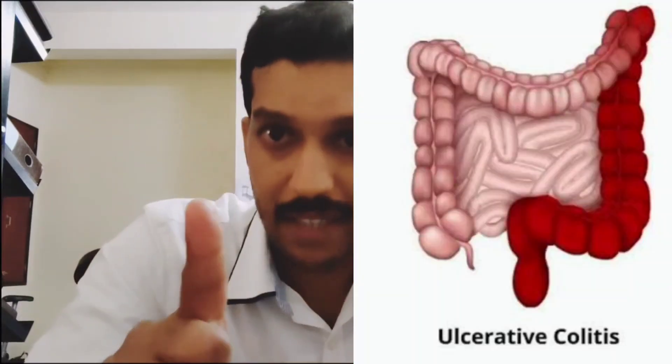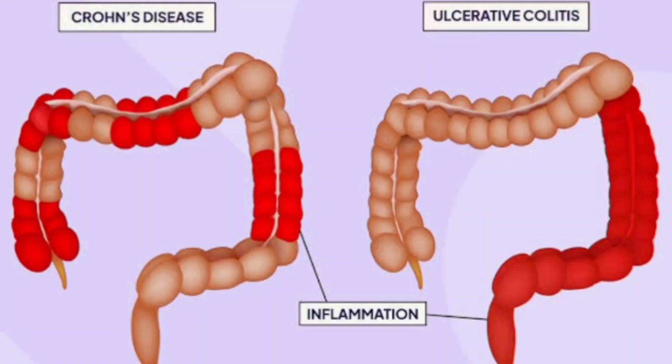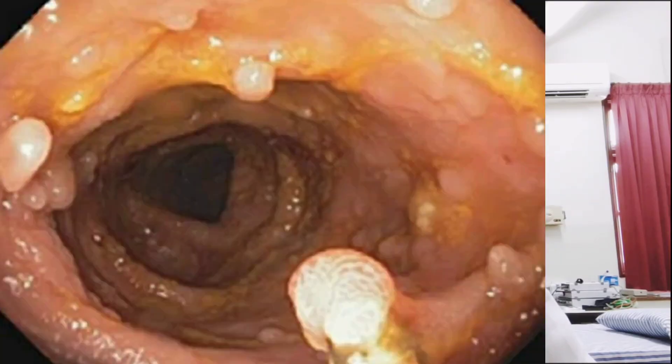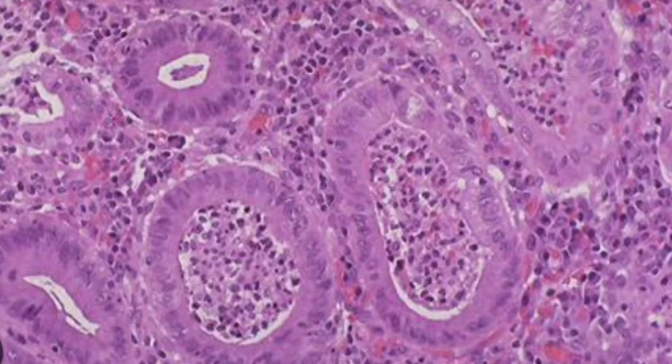In ulcerative colitis, the most common site is the rectum, followed by the colon, due to retrograde spread. Backwash ileitis can occur — where the disease spreads back to the terminal ileum. The layer affected is the submucosal layer. The most common gross feature is pseudopolyps. Cryptitis and crypt abscesses are seen, and are more common in ulcerative colitis than in Crohn's disease.